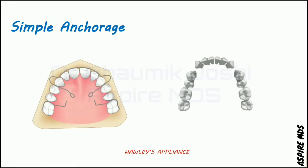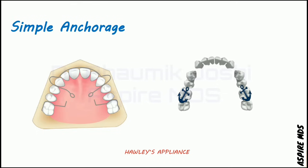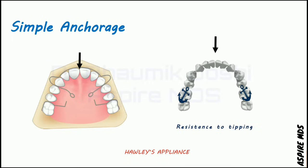Another example of simple anchorage is the Hollis appliance, where you want to retract teeth back to the arch. The posterior teeth act as anchorage and resist the tipping kind of tooth movement, ultimately retracting the teeth back in the arch. This is also an example of simple anchorage.